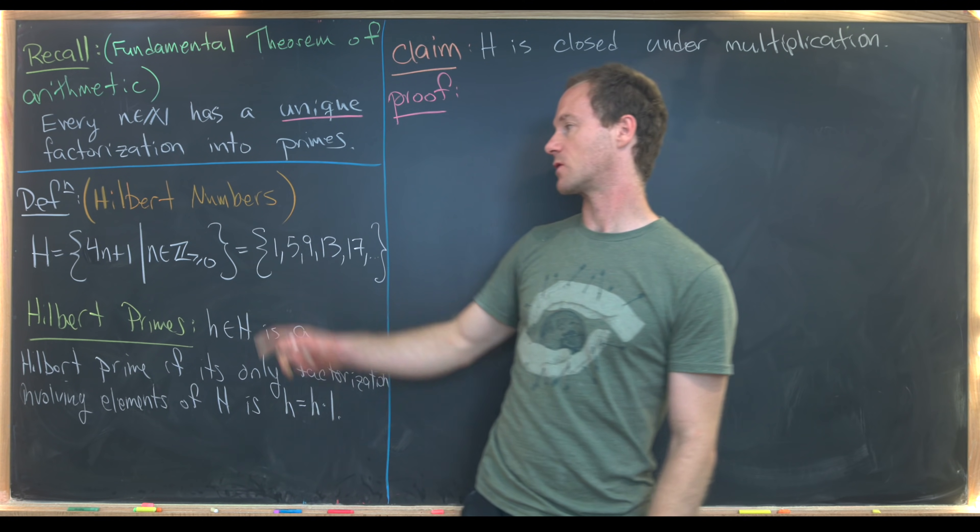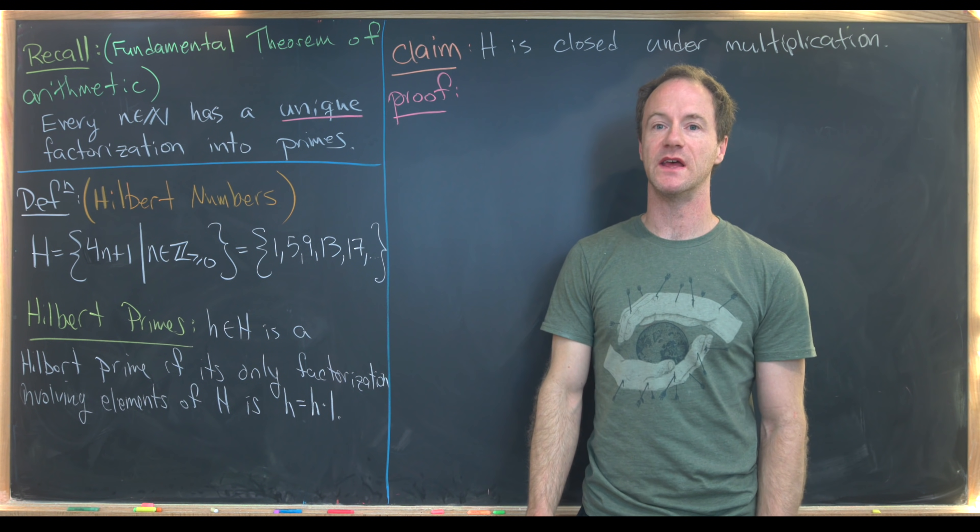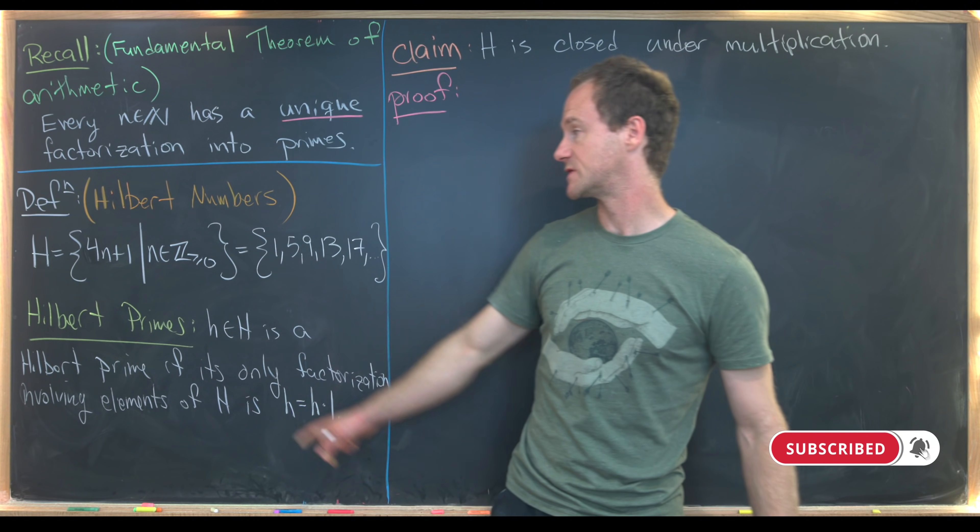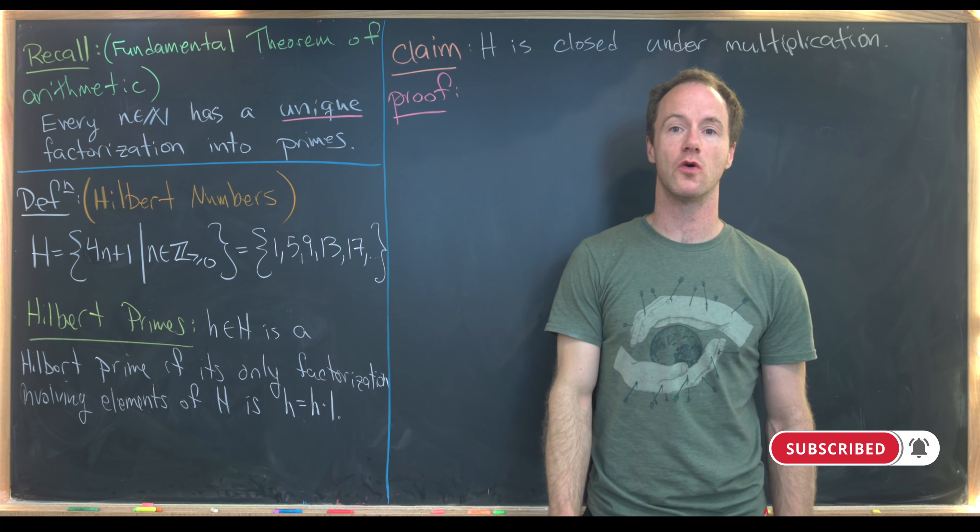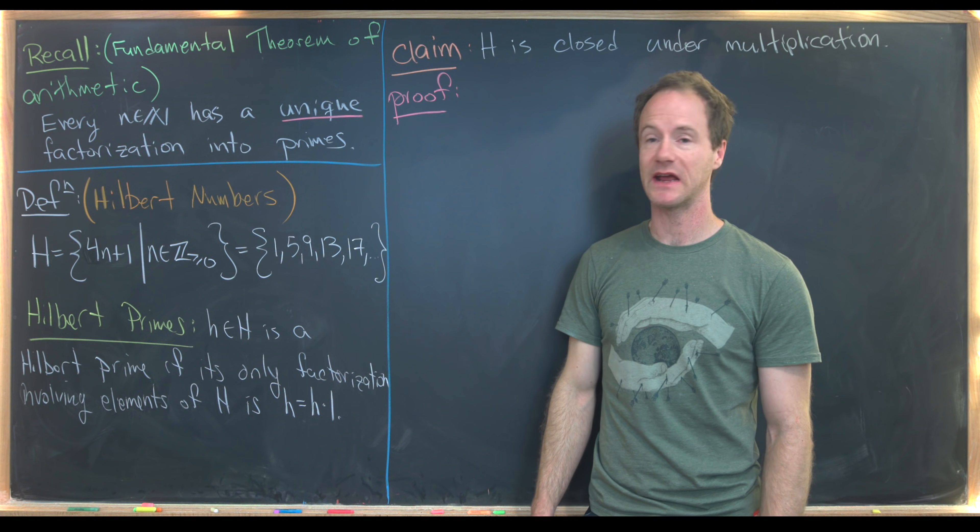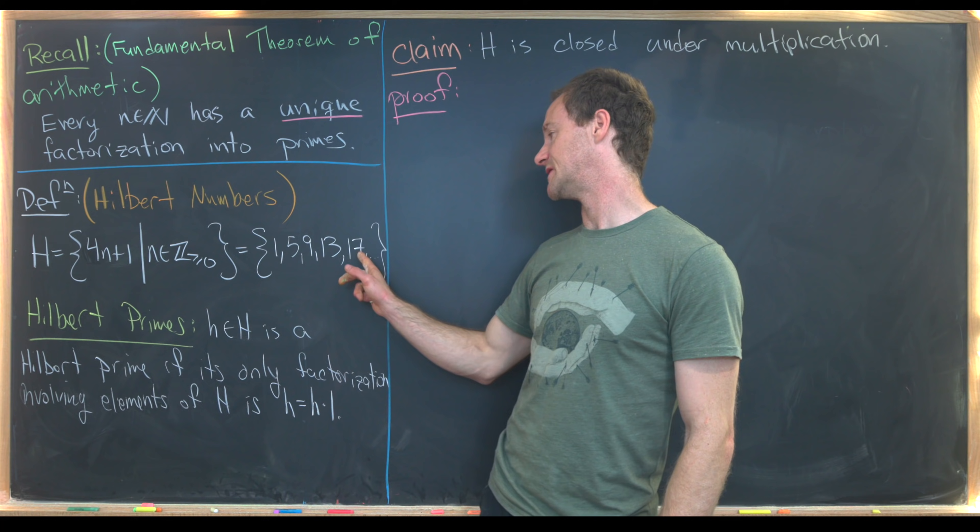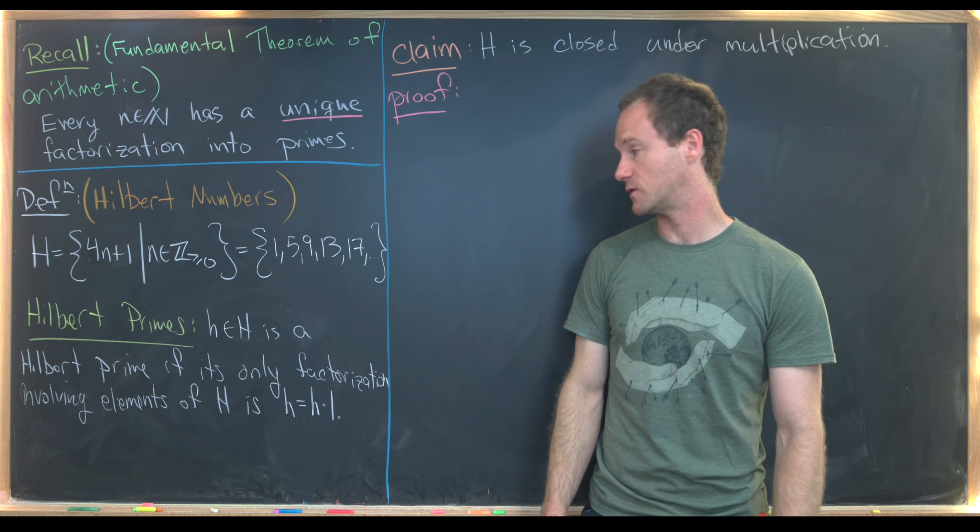Hilbert numbers are all numbers of the form 4n plus 1. Capital H is 4n plus 1 as n ranges over all non-negative integers. So we've got 1, 5, 9, 13, 17, and so on and so forth.